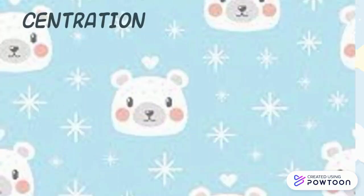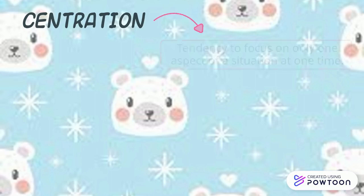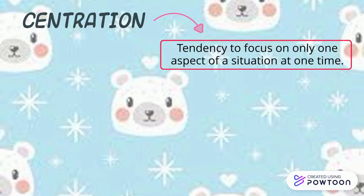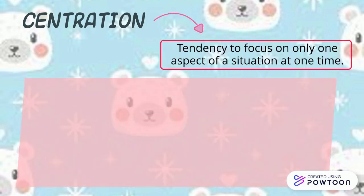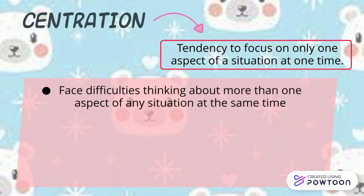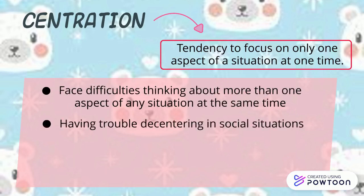The first key feature of the pre-operational stage is Centration. Centration is the tendency to focus on only one aspect of a situation at one time. Children at the pre-operational stage face difficulties thinking about more than one aspect of any situation at the same time. They have trouble decentering in social situations just as they do in non-social contexts.